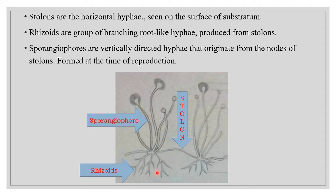Rhizoids are tufts of branching root-like hyphae produced from the stolons. They are both anchoring and absorptive organs. These rhizoids secrete digestive enzymes into the substrate to digest the food, and the digested food is absorbed by them. So digestion in Rhizopus is extracellular. The sporangiophore is the only reproductive structure in Rhizopus; stolons and rhizoids are the vegetative structures.